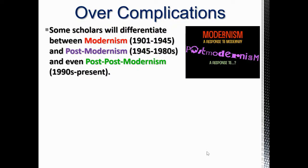The problem is that modernism now specifically refers to before the nuclear age, so it gets complicated. Scholars talk about modernism, which is basically 1901 to 1945, postmodernism from 1945 to 1980, and then even post-postmodernism, which is the 1990s to the present. These are somewhat silly, semantic terms, but they are important for historical context.